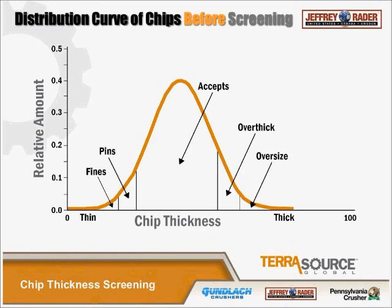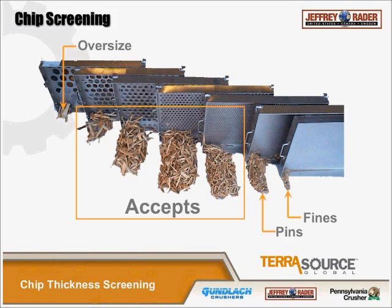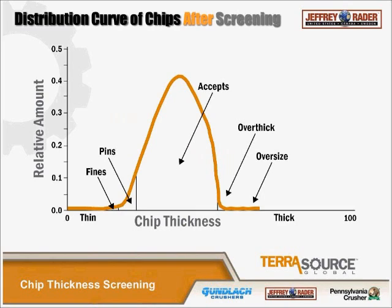This represents fines, pins, accepts, and overs. It's the chips in the middle that you want to retain for your pulping process. You don't want fines or pins in there because they'll consume more chemicals than desired, and oversized chips will come out as knots. After chip thickness screening, your curve should show fewer fines, still some pins, a greater percentage of accepts, and very few overthick with no oversized chips.